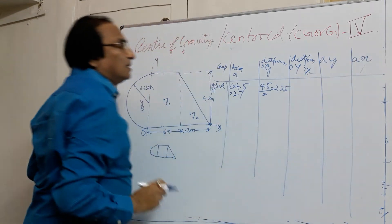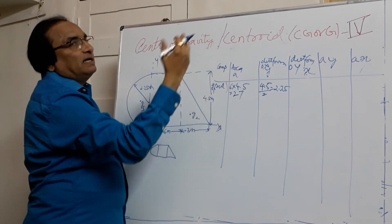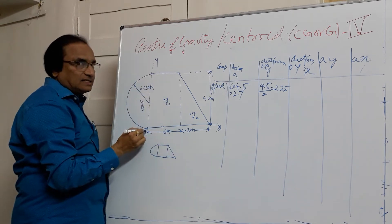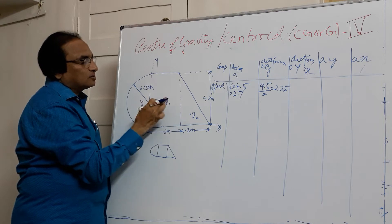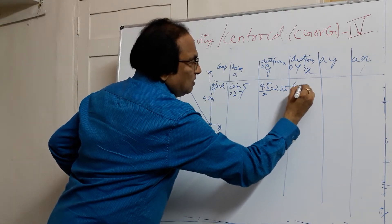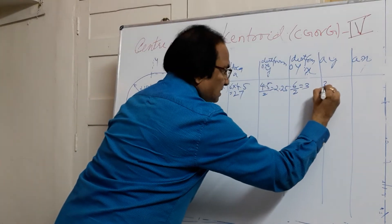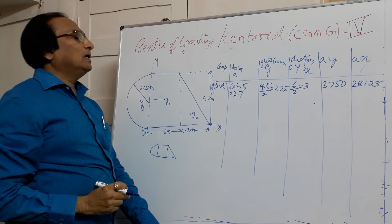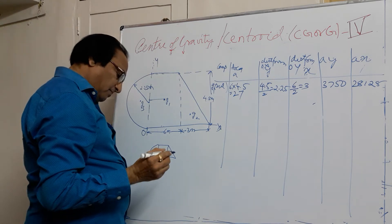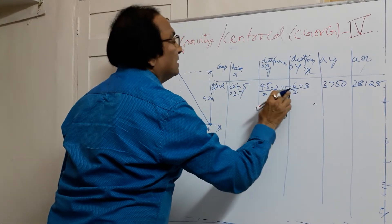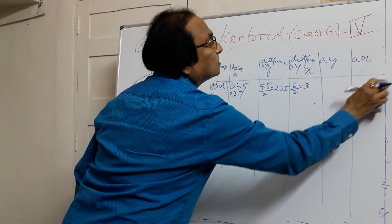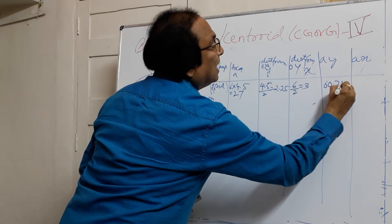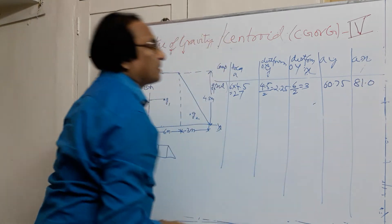Now I want the distance of the centroid from the reference axis OY. The total width is 6, so half of that is 3. Thus 6 divided by 2 equals 3. Multiplying these values, you get AY as 60.75 and AX as 81.